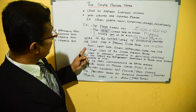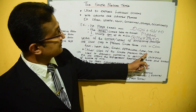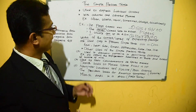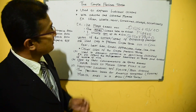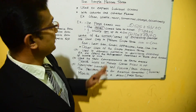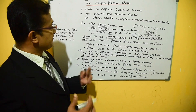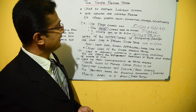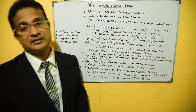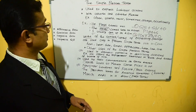For example: feel, hear, see, smell, appreciate, hate, like, and love - we don't use them in continuous forms. We don't say: I'm feeling, I'm hearing, I'm seeing, I'm smelling, I'm appreciating, I'm hating, I'm liking, and I'm loving. Not at all. Don't ever think of using them in continuous forms.